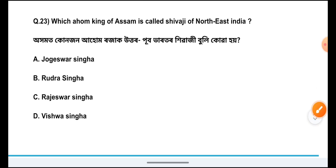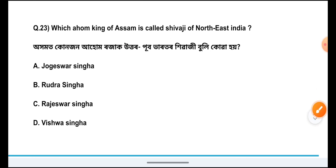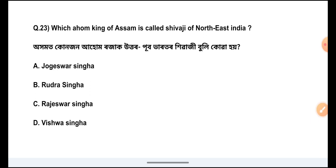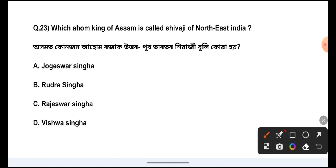Question Number 23: Which king of Assam is called the Shivaji of North East India? The answer is Option B, Rudra Singha.